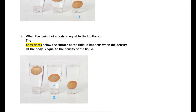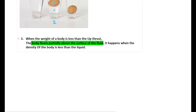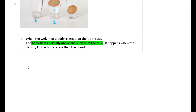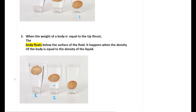Now let's look at the third case: when the weight of the body is less than the upthrust, the body floats partially above the surface of the fluid. This happens when the density of the body is less than the density of the liquid. In this third case, the body is floating partially above the surface of the fluid.